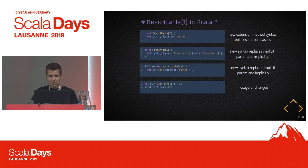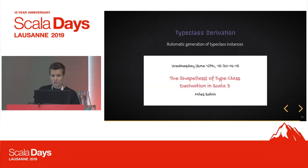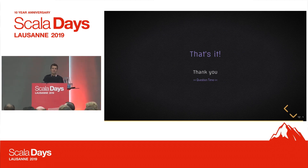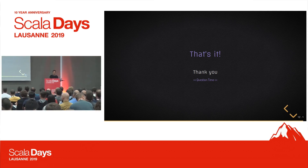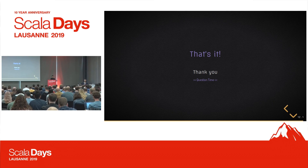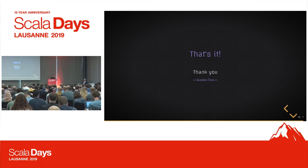One thing you still have to do is implement instances for all your type classes, and sometimes if the implementation is very generic this can be a lot of boilerplate. For this reason Dotty will also provide type class derivation, but this is a huge topic and there is a great talk about it this afternoon. Thanks a lot, I hope you enjoyed the talk — I think we have a couple of minutes for questions.